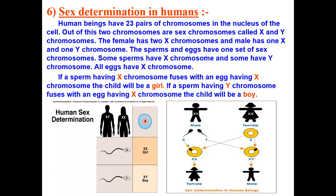Now our today's topic is sex determination in humans. How the sex of a child can be determined? Inside the fertilized egg or zygote is the instruction for determining the sex of the baby. This instruction is present in the thread-like structures which are known as chromosomes. In human beings there are 23 pairs of chromosomes in the nucleus of the cell — 23 pairs, not just 23 single chromosomes.